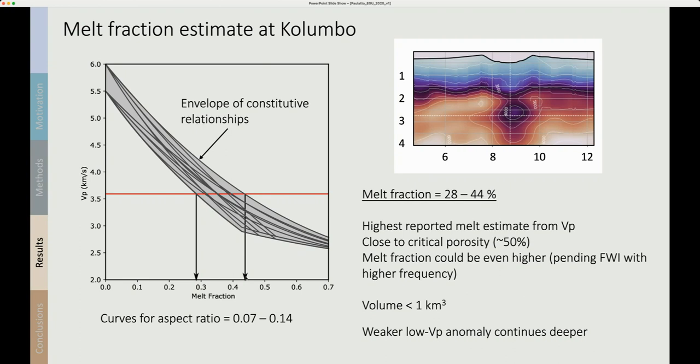The volume of this anomaly is smaller than one cubic kilometer, so it's really quite small compared to the size of the volcanic and magmatic system. The low Vp anomaly continues deeper, but it's weaker at greater depth. So this may correspond to a relatively small but high melt fraction body that sits at the top of the magmatic system, similar to predictions of the mush model.